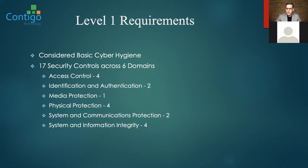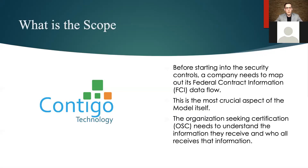I want to make this very clear: for these individual practices required for CMMC, this is not just an Excel spreadsheet of yes and no's. Before starting into the security controls, a company needs to map out its federal contract information data flow. Federal contract information, as defined in DFARS 52-204-21, is any information not intended for public release that is provided by or generated for the government under a contract to develop or deliver a product or service. This does not include public websites or transactional information such as necessary to process payments.